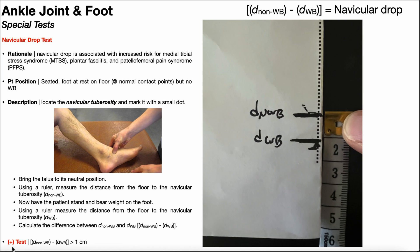You can see a positive navicular drop test is where this quantity, which is the navicular drop, is greater than one centimeter. This means that normal is one centimeter or less. In any individual, we expect some navicular drop, but it's excessive when it's beyond one centimeter.